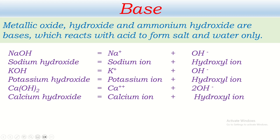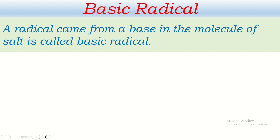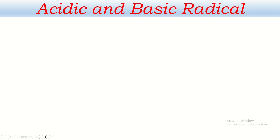Beside the hydroxyl ion, there are other ions I want to highlight — sodium ion, potassium ion, calcium ion, and many others which come from different bases. These are called basic ions and also called basic radicals. A radical that came from a base in the molecule of a salt is called a basic radical.